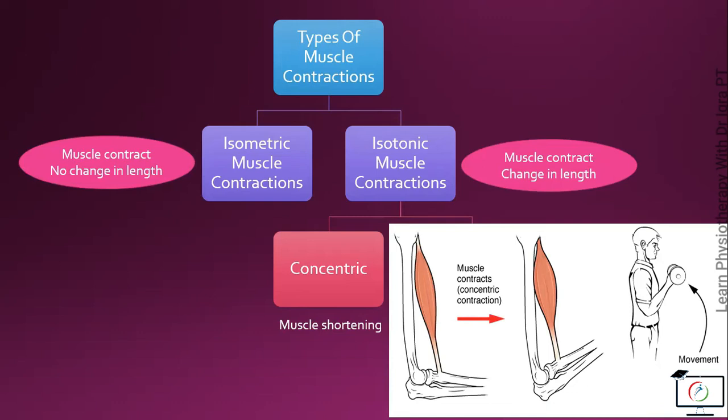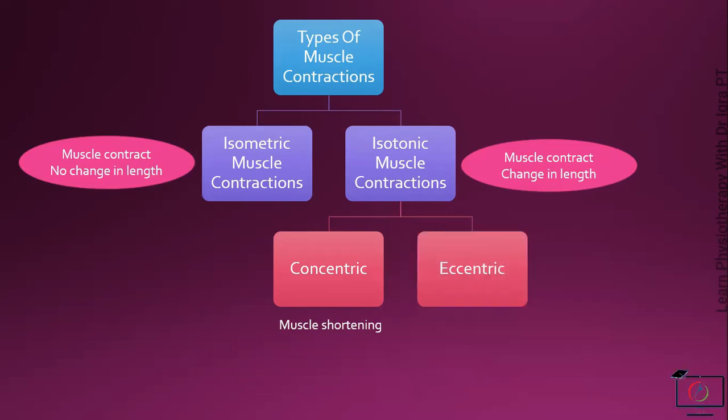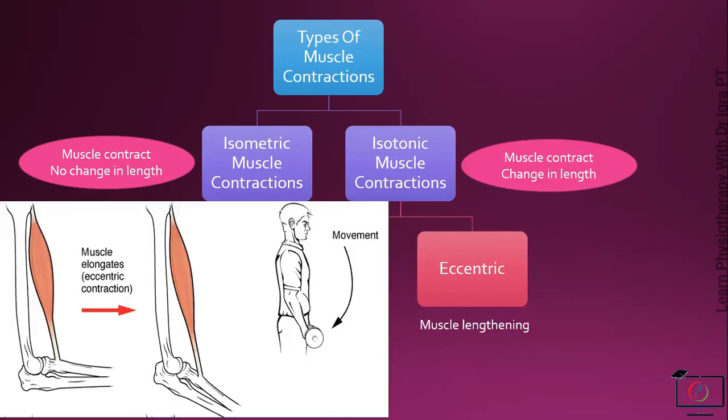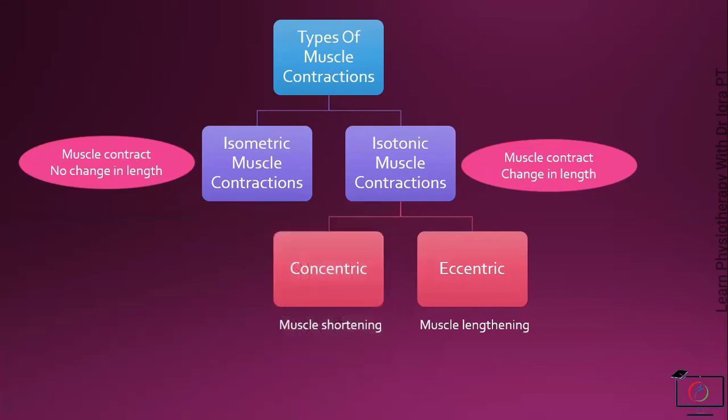While in eccentric muscle contraction, the muscle lengthens. As in this diagram, you can see the person is extending the elbow joint and the bicep muscles elongate.